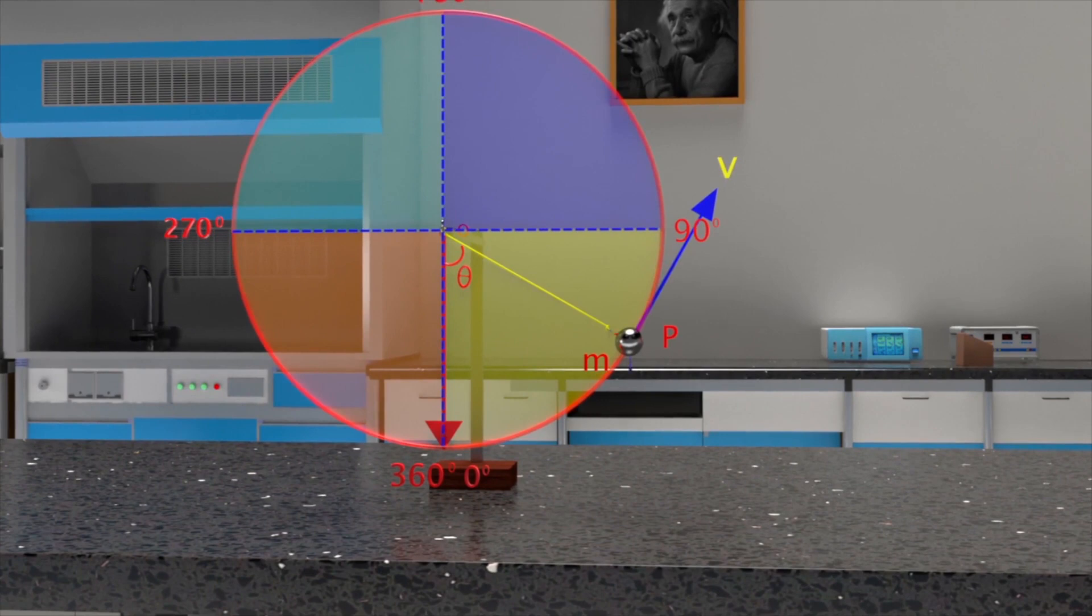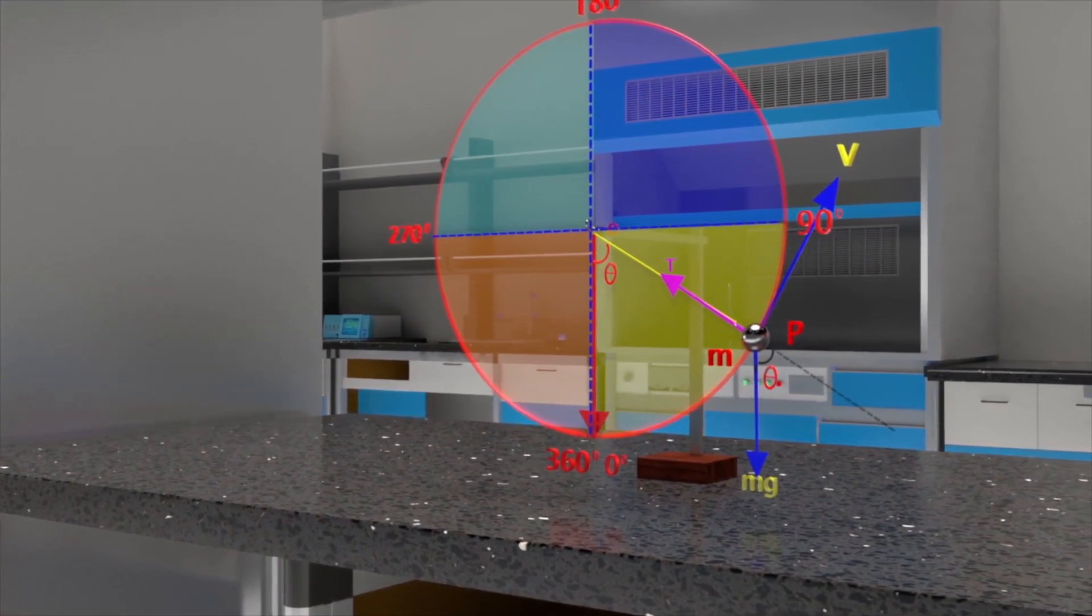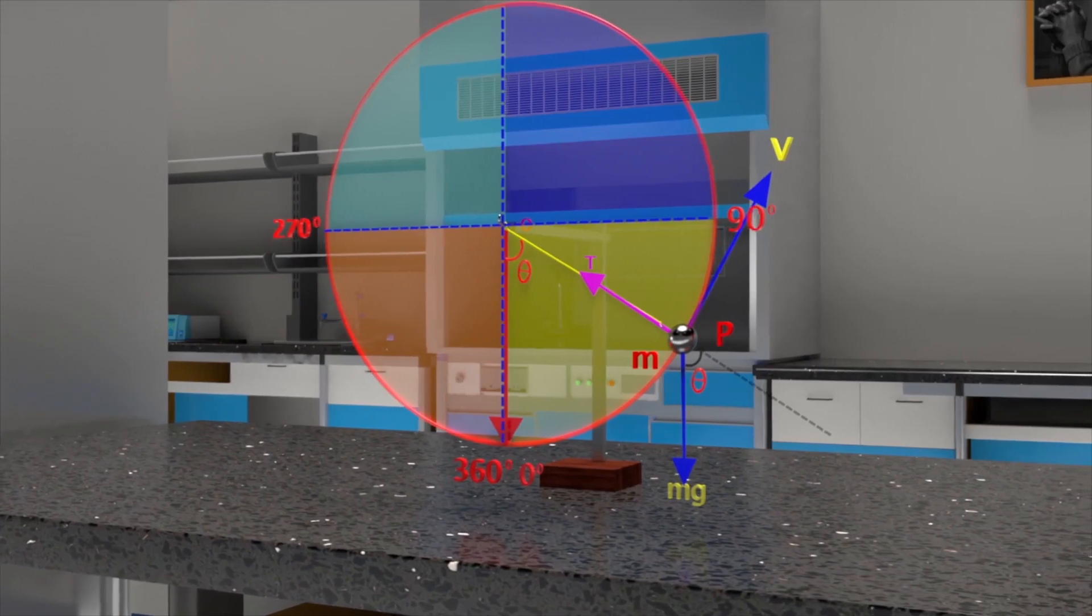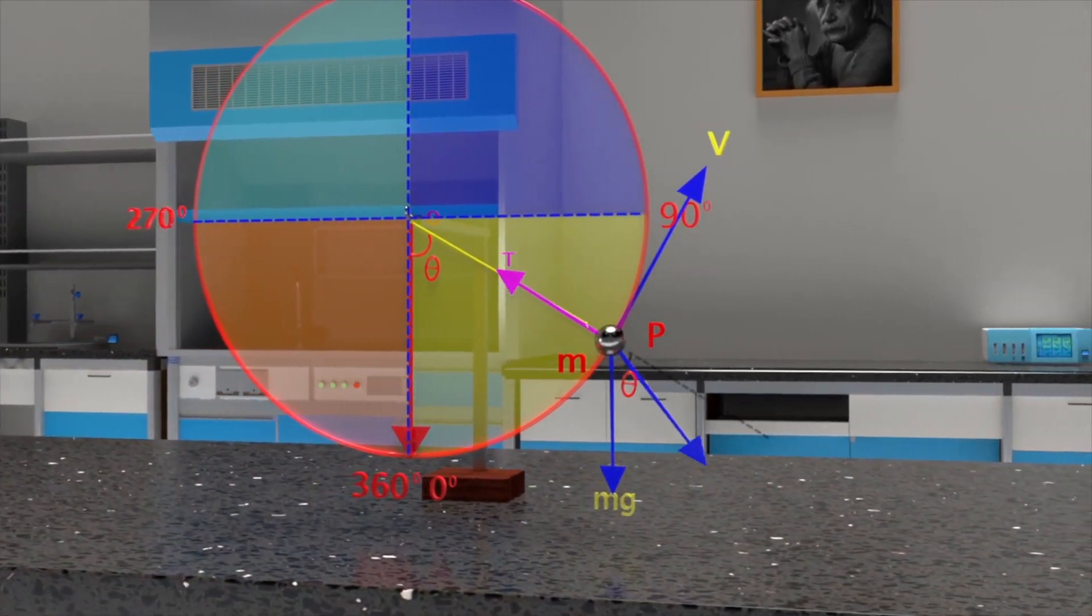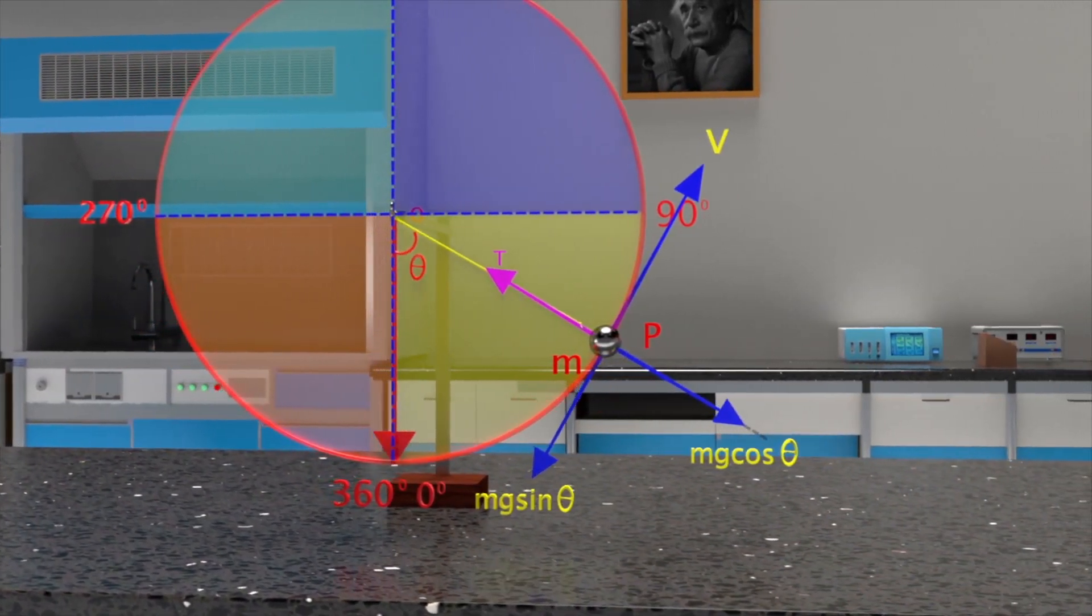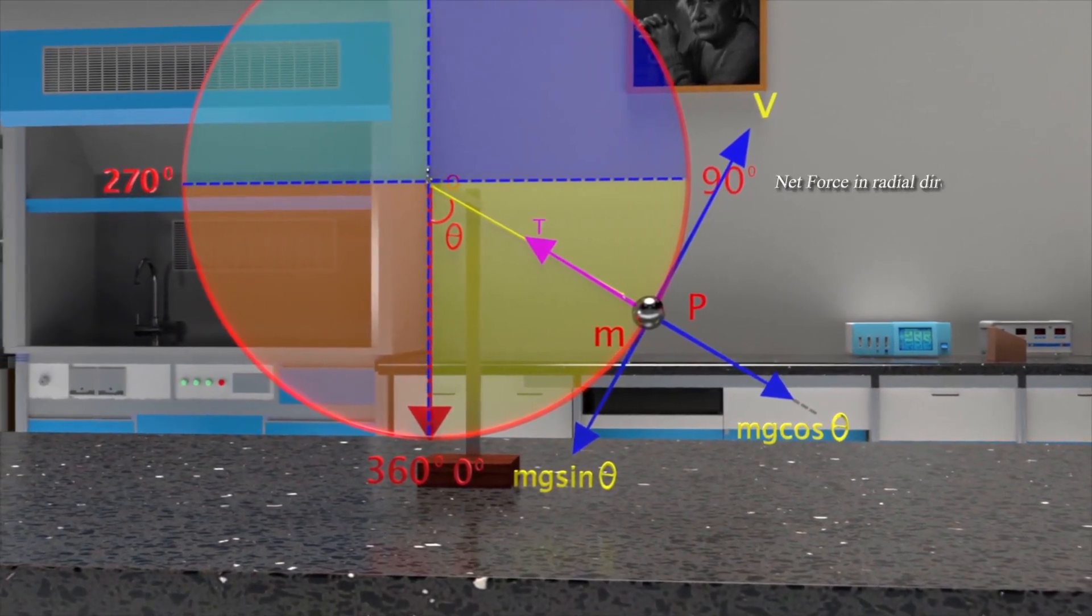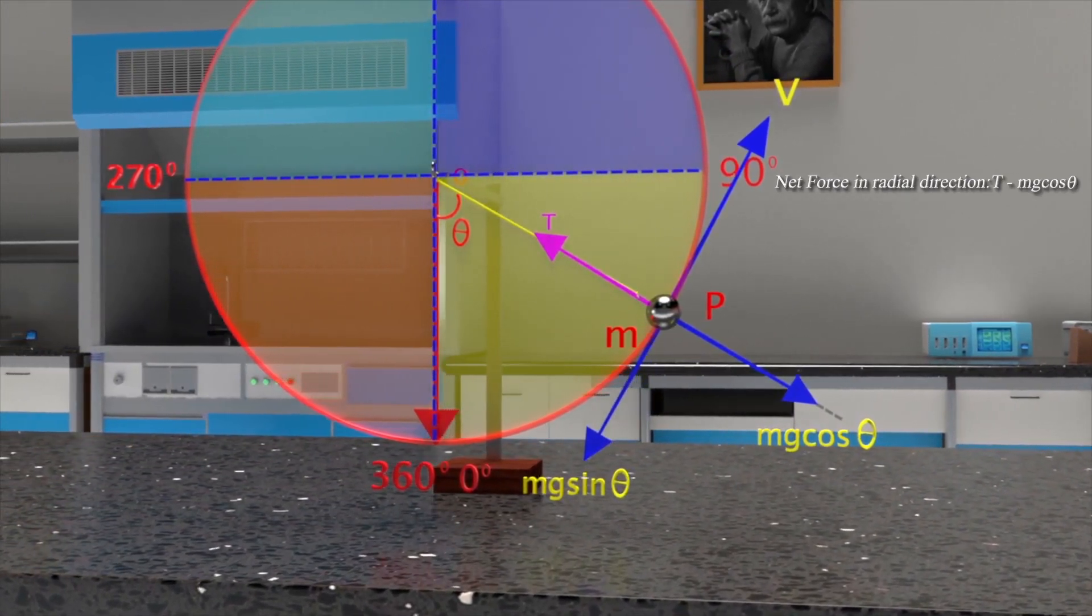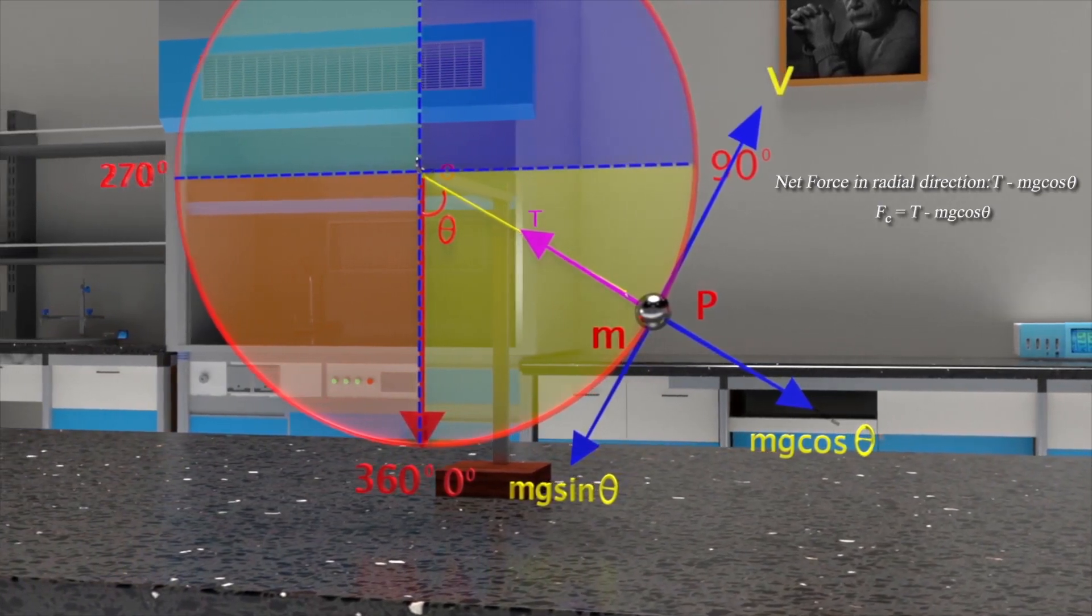Let's draw the free body diagram of the bob at P. At P, tension T acts along the radius. Gravitational pull MG acts in a vertically downward direction, which can be split into two components: one in the radial direction, and the other perpendicular to it. Net force acting along the radial direction is T minus Mg cos theta. This force along the radial direction is the net centripetal force, Fc.